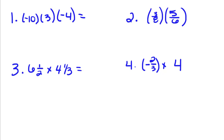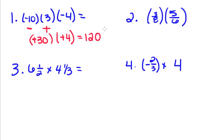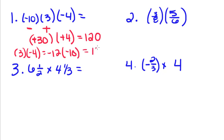Now we're going to do some multiplying with numbers. So negative 10 times 3 gives us negative 30. Then we're going to take negative 30 and multiply it by negative 4. Since we have two of the same sign, we're going to get a positive number, so this becomes positive 120. Multiplication has a property called commutative, which means you can multiply numbers in any order and still get the same result. If I had taken 3 times negative 4, I would have gotten negative 12, and negative 12 times negative 10 would still give me positive 120.